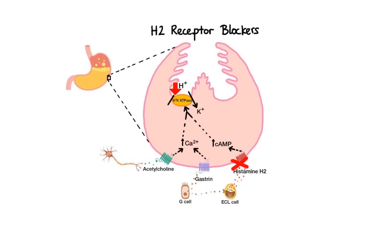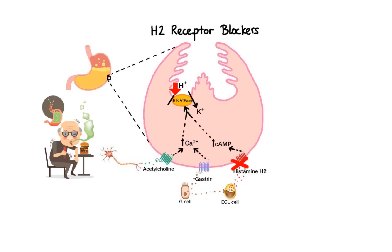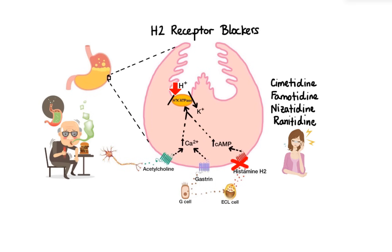This makes H2 antagonists useful in the treatment of gastric ulcers and gastroesophageal reflux disease. Examples of H2 receptor antagonists include cimetidine, famotidine, nizatidine, and ranitidine. In general, these drugs are well-tolerated, so adverse effects are few and mild, with the most common being headache. Out of the four, cimetidine is the most likely to cause drug-drug interactions and side effects, some of which may include gynecomastia and galactorrhea due to its anti-androgenic and prolactin-stimulating effects.